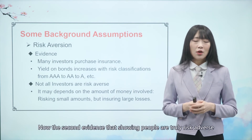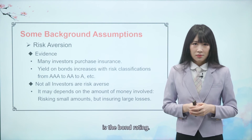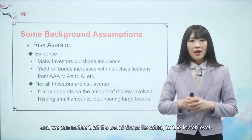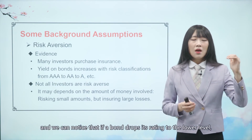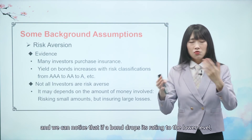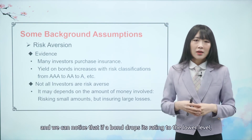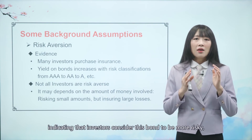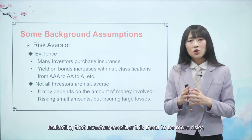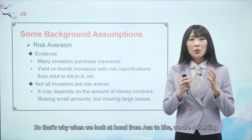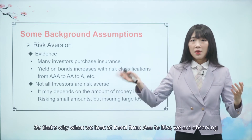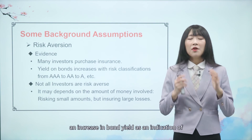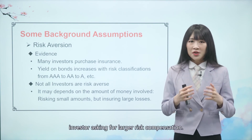The second evidence showing people are truly risk averse is bond ratings. Bond ratings are classified from AAA down to BBA. We can notice that if a bond drops to a lower rating, its promised yield actually goes up, indicating that investors consider this bond more risky. So, from AAA to BBA, we observe an increase in bond yield as investors ask for larger risk compensation.